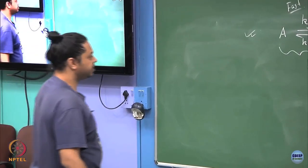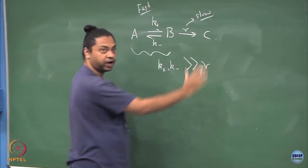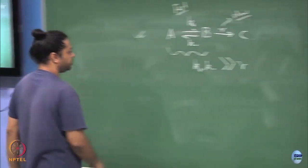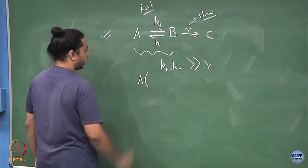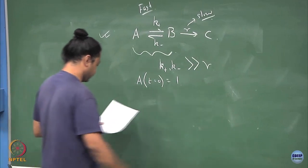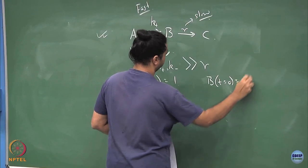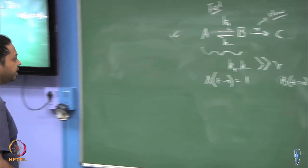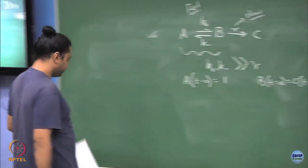So I have a separation of time scales: 1/k₊ and 1/k₋ are much smaller than 1/r. Let me set up the initial condition: at t = 0 I simply have all A, with B and C equal to zero, normalized so that A(0) = 1.